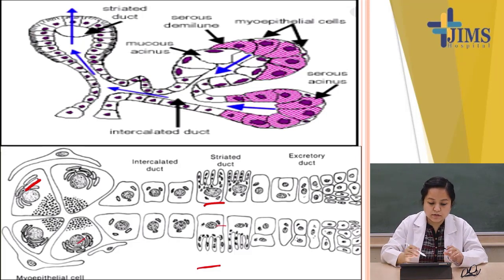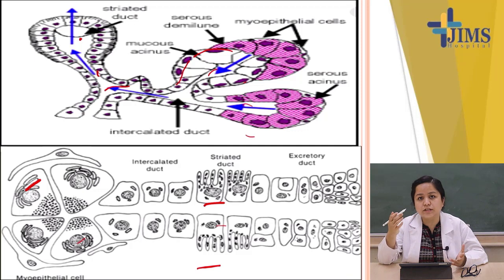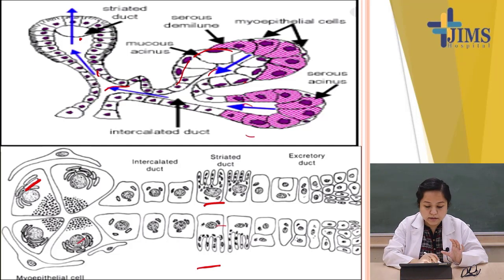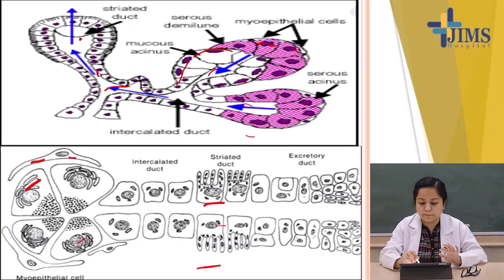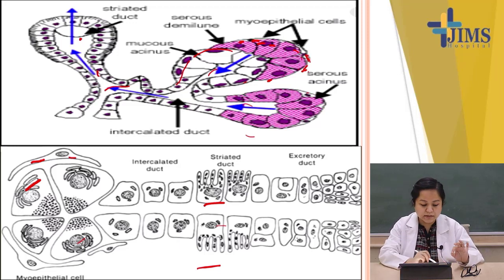In the diagram, you can see the duct, then mucous or serous acini depending on which salivary gland you are looking at. Around the acini are flattened myoepithelial cells. The pinkish areas are serous acini; above them you can see mucinous acini, and the flattened myoepithelial cells are visible around them.